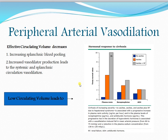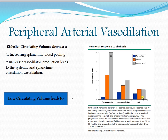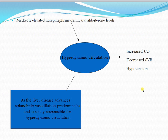Regarding peripheral arterial vasodilation: effective circulating volume is decreased due to increased splanchnic pooling of blood and increased vasodilator production, leading to systemic and splanchnic vasodilation. The low circulating volume leads to activation of the RAAS — renin-angiotensin-aldosterone pathway. In patients with ascites and renal failure, renin activity is significantly increased, followed by elevated norepinephrine and ADH, which tries to retain all the water.